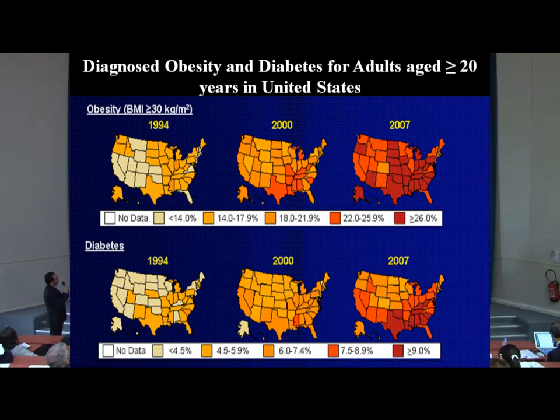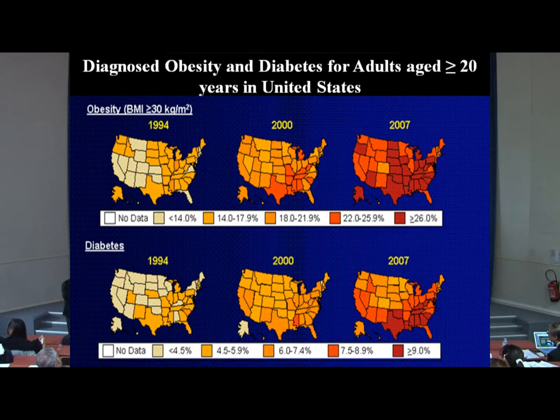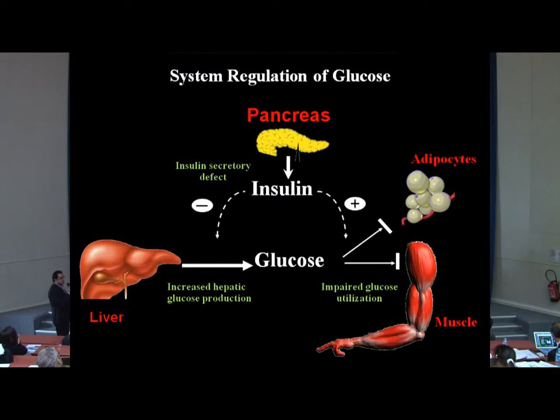Concomitant with the increase in obesity there is an increase in insulin resistance, which will lead to type 2 diabetes. One major focus for us is to understand how insulin resistance leads to the development of diabetes and what are the signaling mechanisms happening in the periphery to regulate glucose levels.